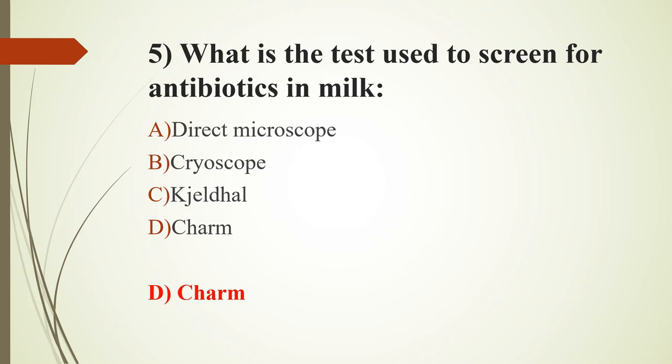For the other options: option A, direct microscope — we all know that; option B, cryoscope, which is used to detect the freezing point of milk; and option C, the Kjeldahl method, which measures the total nitrogen content of an organic substance.